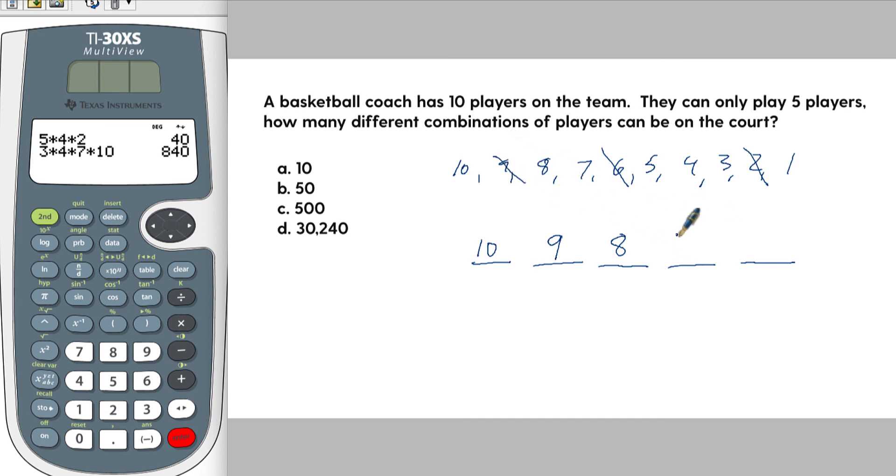And then now you've got seven to choose from. And then let's say you pick this one. So now you have a total of six here. So we're going to do ten times nine times eight times seven times six, and that's going to tell us the probability of how many different ways you could have ten players if you can only play five at a time.